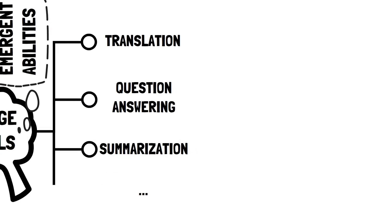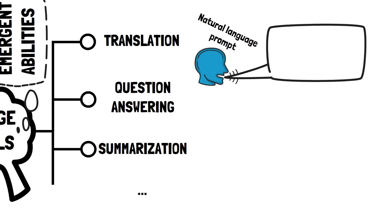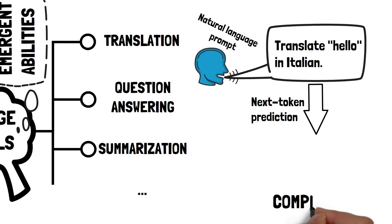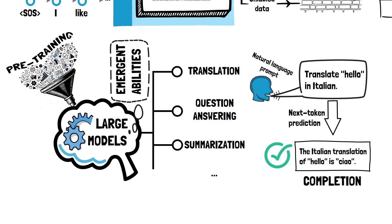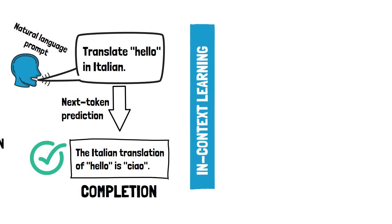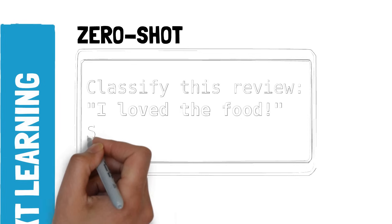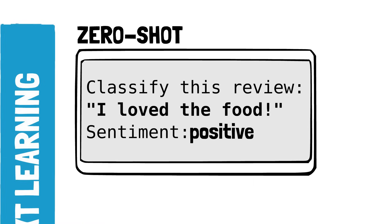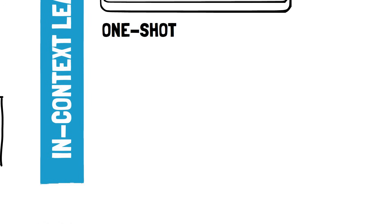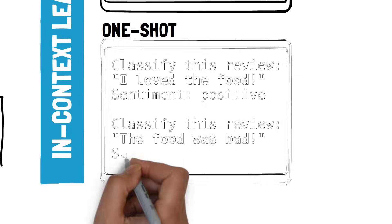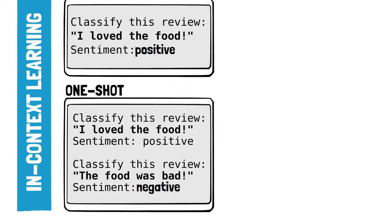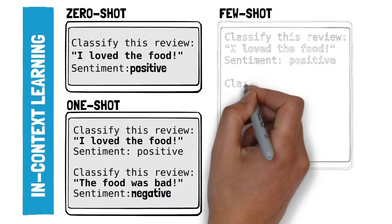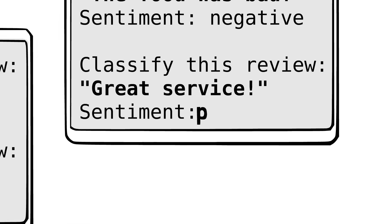This could be achieved simply by providing a natural language prompt describing the task. As the model predicted the next token to complete the prompt, it would often generate a valid response. The ability to perform a new task without direct training is called in-context learning, and it can take different forms. Zero-shot refers to the model being able to understand and generate an answer for a task directly without seeing any examples in the prompt. One-shot learning involves showing the model a single task example before attempting it — for example, seeing one sentiment analysis example before being asked to give the sentiment of a review. Few-shot learning is an extension where the model is shown a few examples of a task in the prompt before being asked to carry it out.